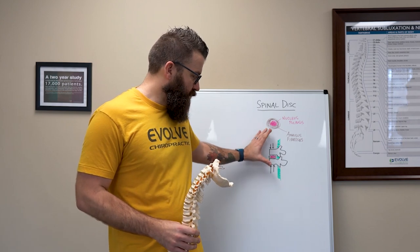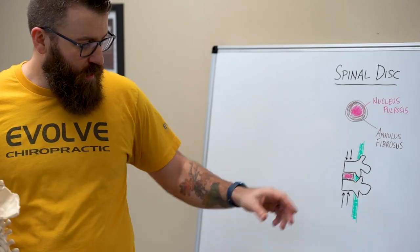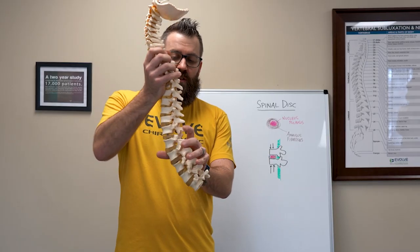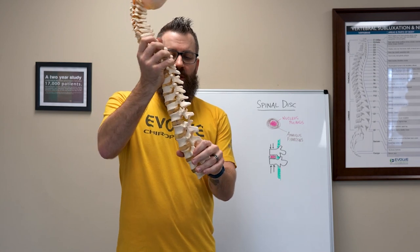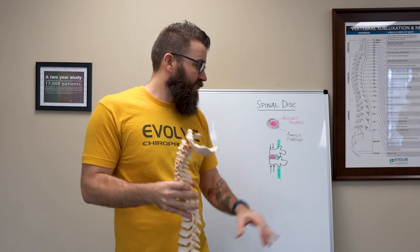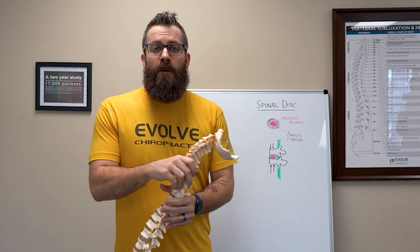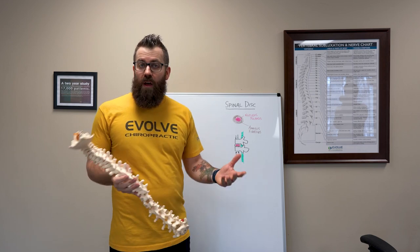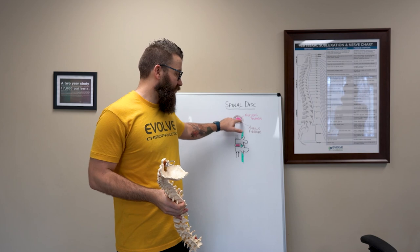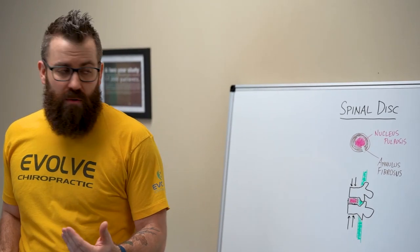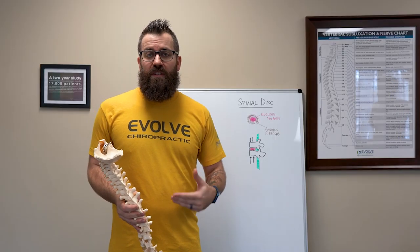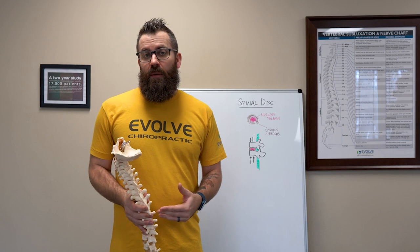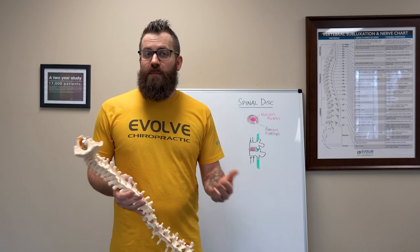Under normal compressive load, the disc should be able to handle it. But if we take this bone and change it into a different position — flatten out your spine — we're already starting in an improper position. Think of the nucleus pulposus like a balloon: as we compress, if we're not compressing right in the middle, we put undue stress, forcing that disc to potentially bulge out. That disc can start to push out and break through the annulus fibrosis, leading to disc bulges, disc herniations, compressed nerves, and slip disc.